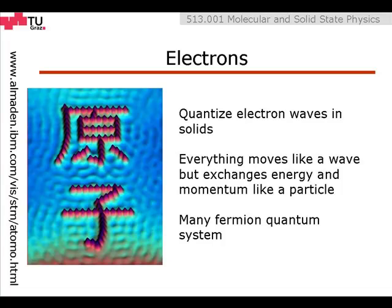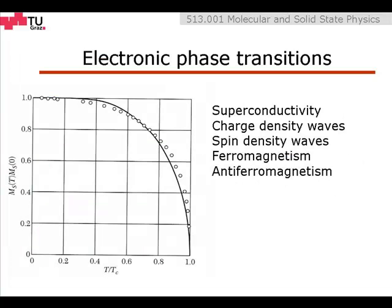Systems of many electrons have different properties than systems of many photons or phonons, because electrons are fermions while photons and phonons are bosons. One of the interesting things about many electron quantum systems is that due to the Coulomb interaction between the electrons, the electrons can condense into new phases at low temperature.